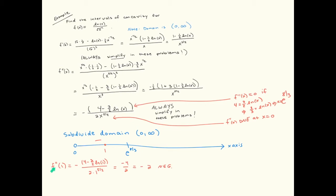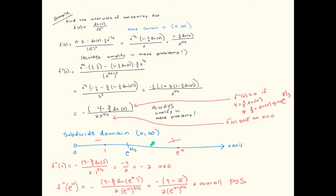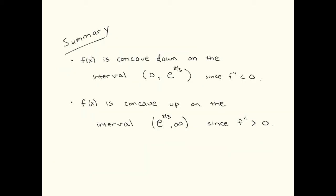Let's pick x equals one. Plugging into the second derivative — remember ln of one equals zero — we simplify and get negative two. So the second derivative is negative in that first region. For the next region, I'll pick e to the tenth power, because ln and e cancel each other out. That gives ten times three-halves, which is fifteen. So four minus fifteen is negative eleven, and there's another minus sign out front, making it overall positive. The second derivative is positive from e to the eight-thirds to infinity. From zero to e to the eight-thirds, the second derivative was negative, so it's concave down. From e to the eight-thirds to infinity, the second derivative is positive, so it's concave up.